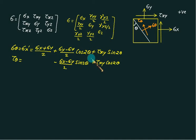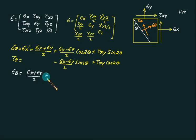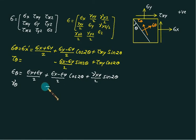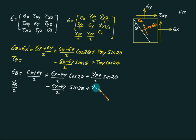In a similar fashion, we can write epsilon_theta = (epsilon_x + epsilon_y)/2 + (epsilon_x − epsilon_y)/2 · cos(2θ) + (gamma_xy/2) · sin(2θ). For gamma_theta/2, it equals −(epsilon_x − epsilon_y)/2 · sin(2θ) + (gamma_xy/2) · cos(2θ).